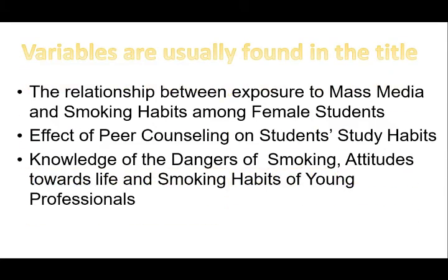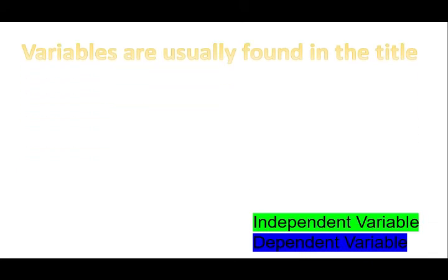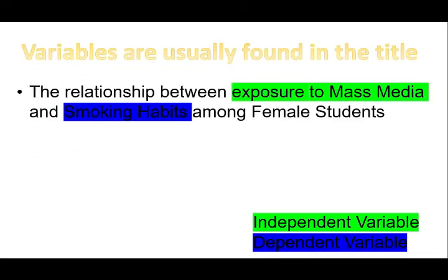Let's take a look at these examples. Variables are usually found in the title. Take a look at these examples and identify which are the independent and the dependent variables. Here are the answers: 'The relationship between exposure to mass media and smoking habits among female students.' The independent variable here is exposure to mass media — this can stand alone and is the one causing an effect on smoking habits. Exposure to mass media can directly influence smoking habits among female students.